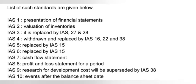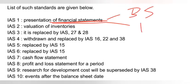I will show you 10 standards of International Accounting Standards. IAS-1 covers the presentation of financial statements — the balance sheet and profit and loss account. In corporate accounting, we present the balance sheet and profit and loss account.